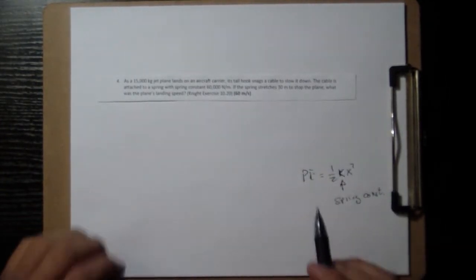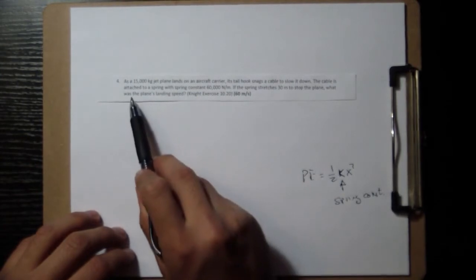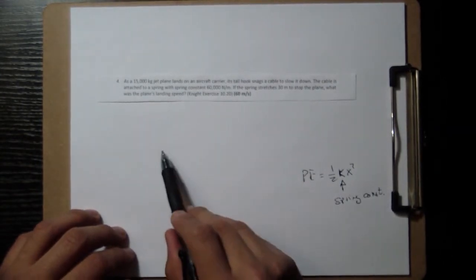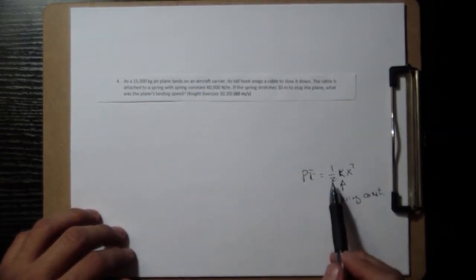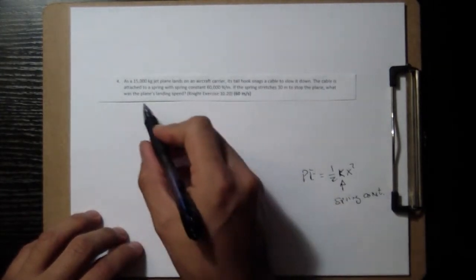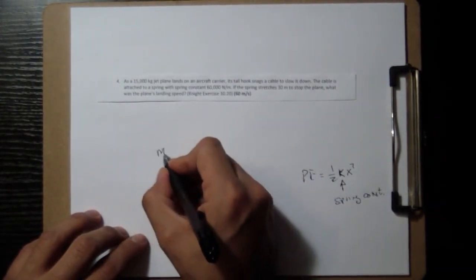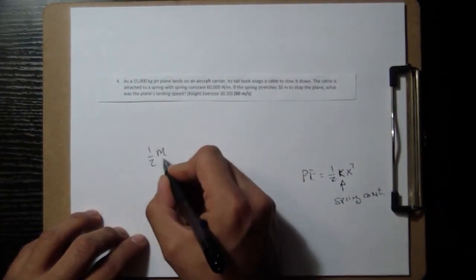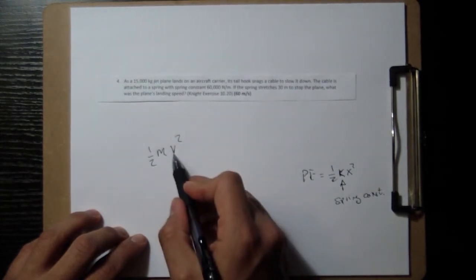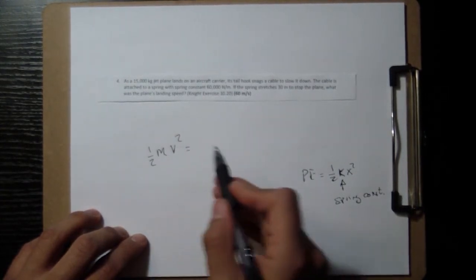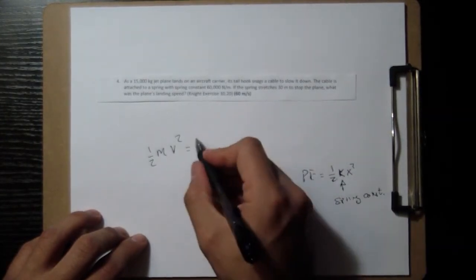And so if we assume conservation of energy, all of the kinetic energy of this plane is going to go into the potential energy of the spring. So the original kinetic energy is going to be one-half its mass times the speed it was going, and that's all going to go into the potential energy of the spring, one-half kx squared.